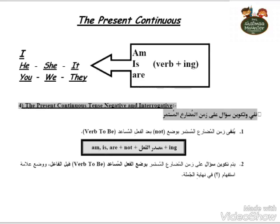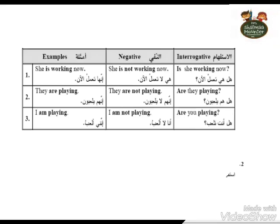For the negative form, we use am not, is not, or are not. Okay, it's very simple, it's very easy. For example: 'She is working now.' And the negative: 'She is not working now.'